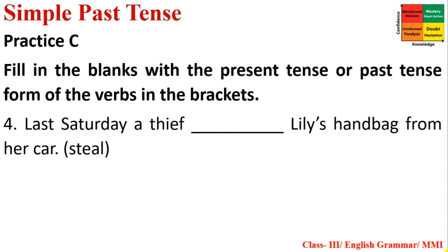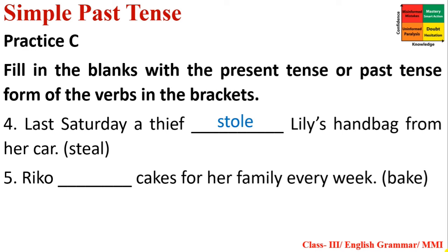Number four: 'Last Saturday, a thief stole Lily's handbag from her car.' 'Last Saturday' signals Simple Past Tense. Past form of 'steal' is 'stole' (S-T-O-L-E). Number five: 'Rico bakes cakes for her family every week.' 'Every week' indicates a habitual action — Simple Present Tense. 'Rico' is third person singular, so we add S: 'bakes.'